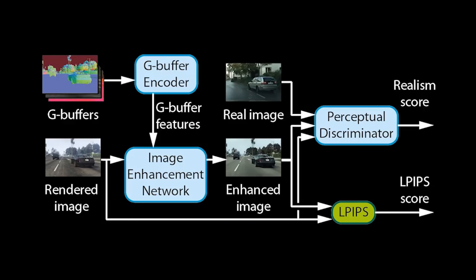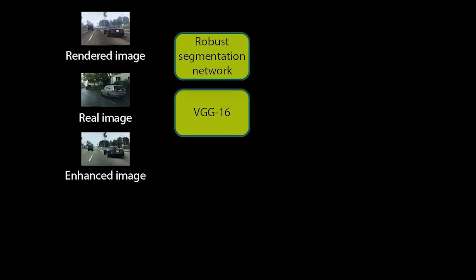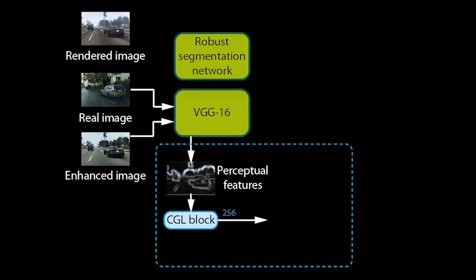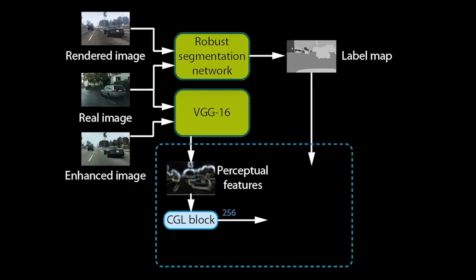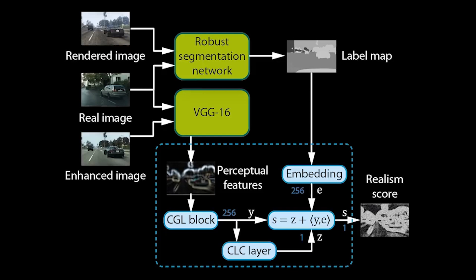The discriminator contains a robust semantic segmentation network and a network for extracting perceptual features — in this case a VGG-16. We extract features from the VGG at multiple levels and pass them through a convolutional network. This differs from prior work that trains discriminators directly on images. Training on VGG features allows our network to quickly learn a model of realism at multiple perceptual levels. We further pass the unmodified rendered image, as well as real images, through the segmentation network to obtain a label map for each. The label map is used to specialize the discriminator on individual object classes. Since we use a pre-trained, robust segmentation network, the object classes are consistent for rendered and real images.